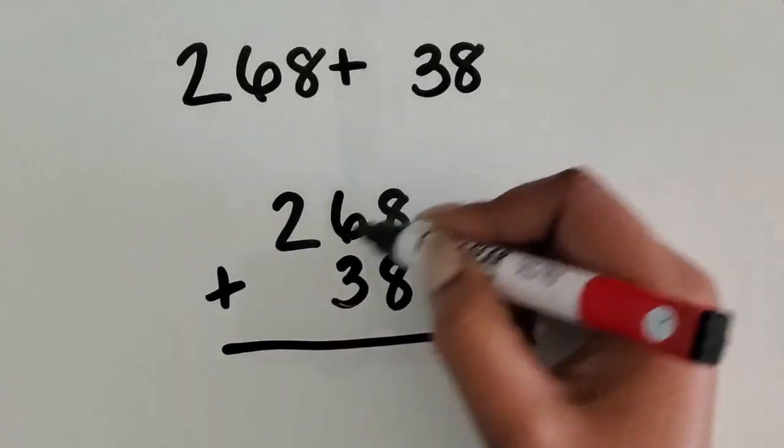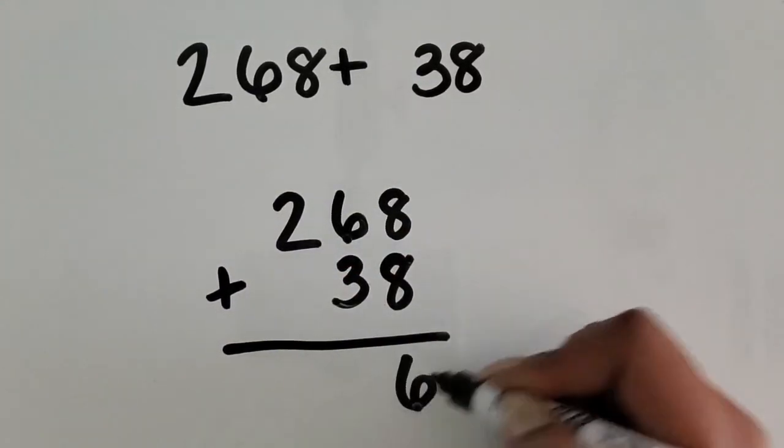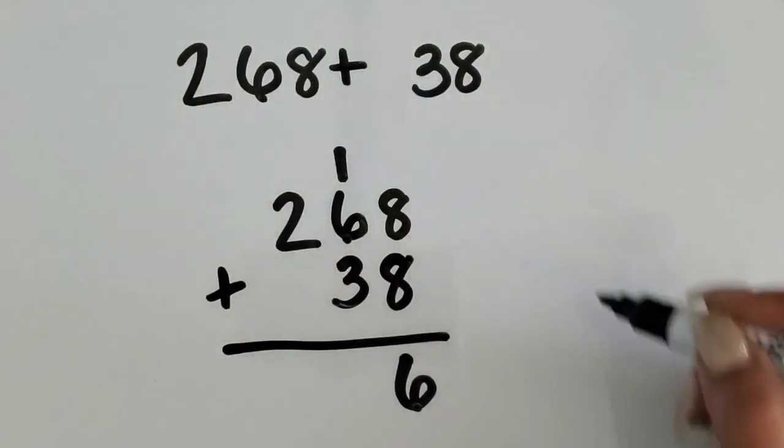Now I'm going to add the ones together. Eight plus eight is 16, so then I'm going to leave the six ones down there and regroup the ten.